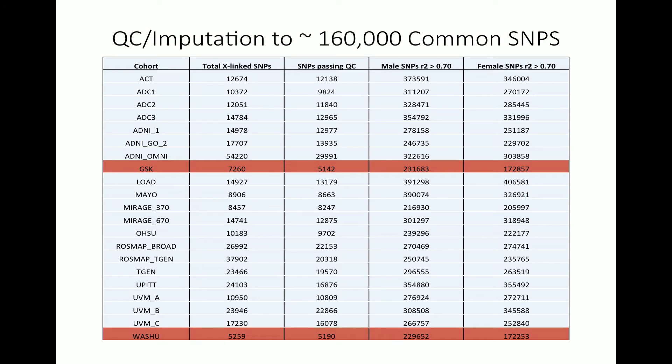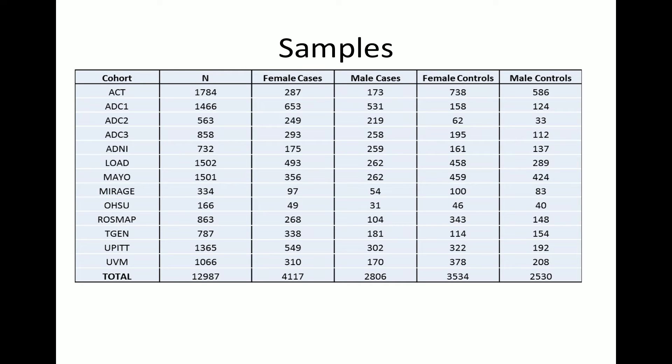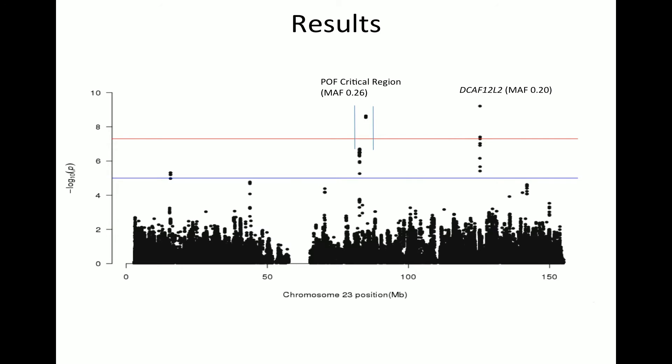After quality control, a couple of datasets with poor SNP call rates — GSK and WashU — were removed, leaving 13 samples with reasonable splits between female cases, male cases, female controls, and male controls. What we found, to my surprise, were two loci that reached genome-wide significance at 10 to the minus 8 on the X chromosome.